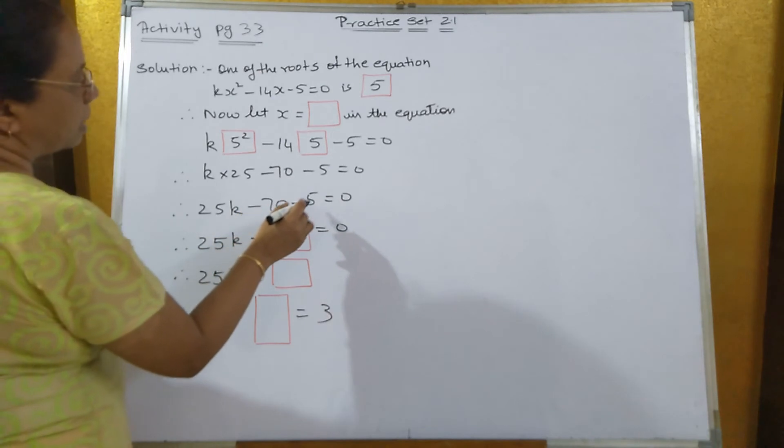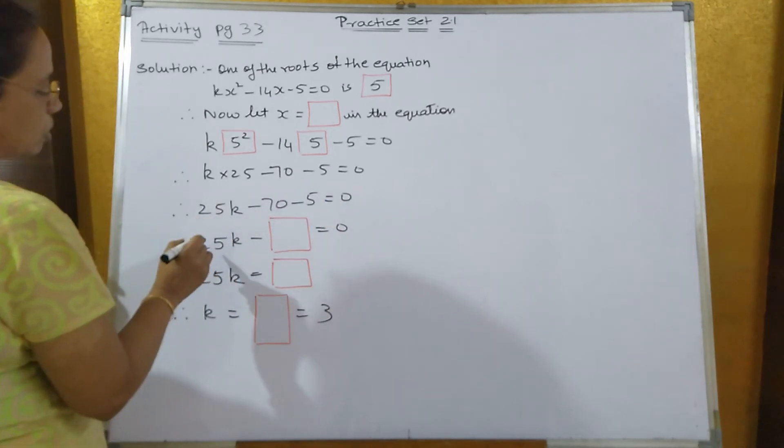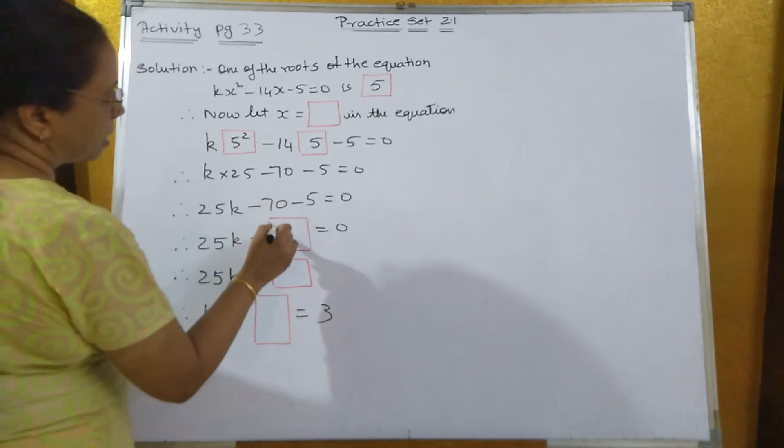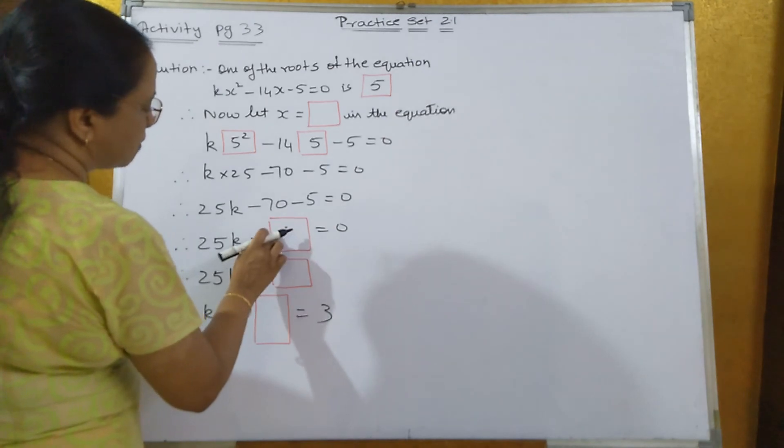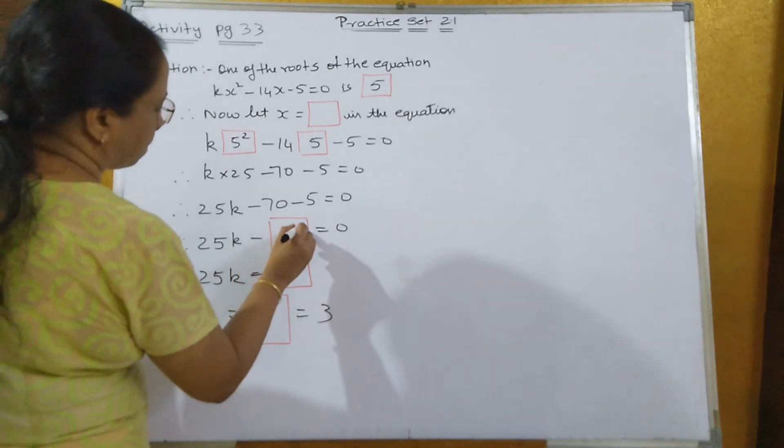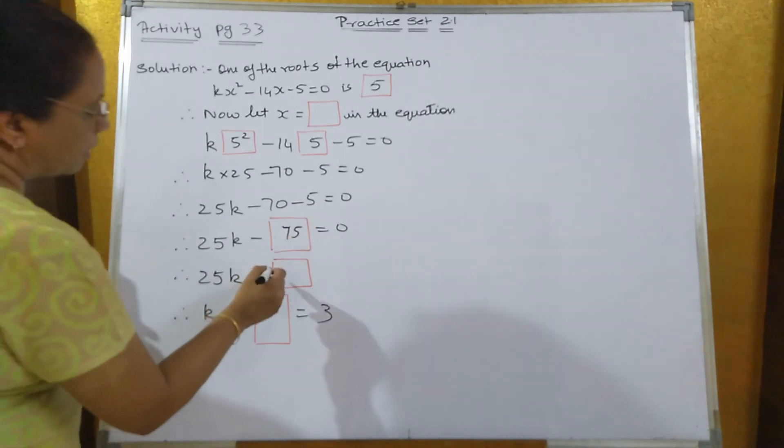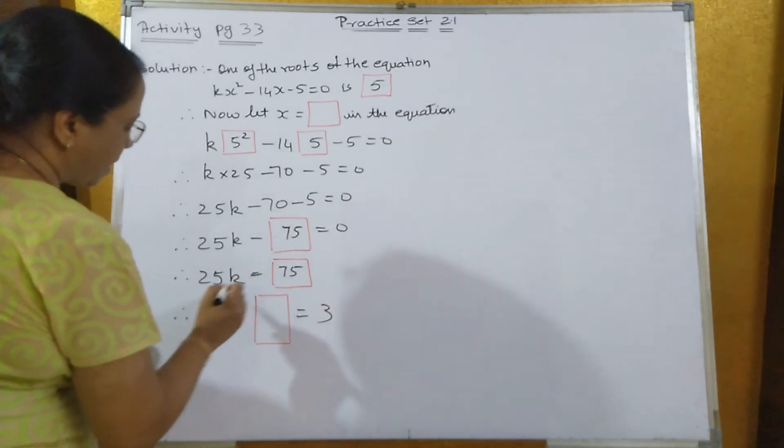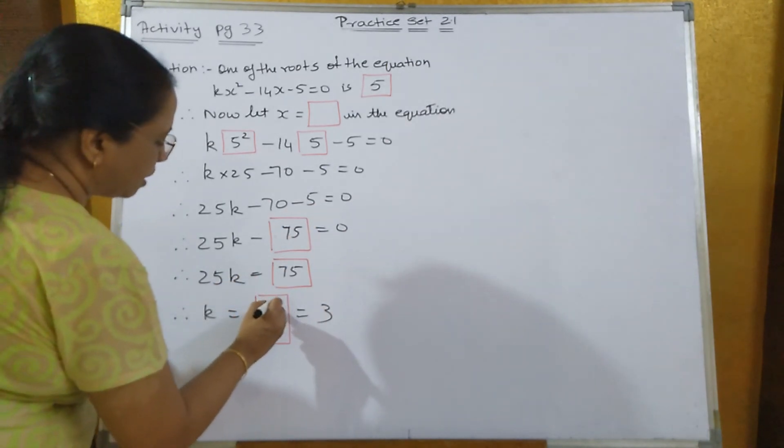So 25k minus 70 minus 5 is minus 75. Take the minus 75 on the other side, it will become plus 75. Therefore k is equal to 75 upon 25.